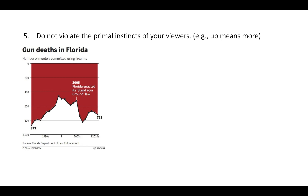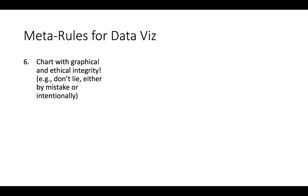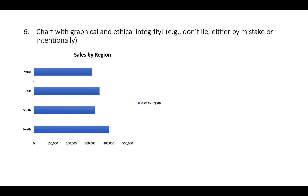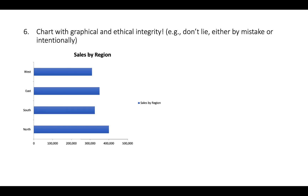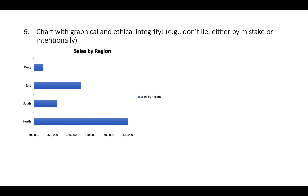Finally, chart with integrity — don't lie, either by mistake or intentionally. If a graph has an x-axis starting at $300,000 instead of zero, North now looks way better than everybody else. You can probably guess it was the North sales manager who created it to make their region look better. Don't manipulate the visual properties of your data to make the numbers look different than what they are.